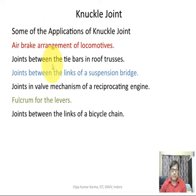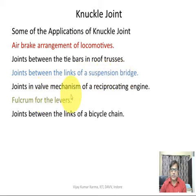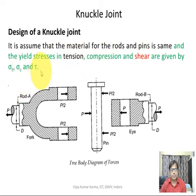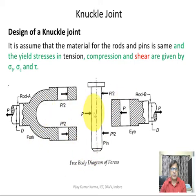Some applications of the knuckle joint include: air brake arrangements of locomotives, joints between tie bars in roof trusses, joints between links of a suspension bridge, joints in valve mechanisms of a reciprocating engine, fulcrums for levers, and joints between the links of a bicycle chain. Let us assume the materials for the rods and pins are the same, with yield stresses in tension, compression, and shear given by sigma_t, sigma_c, and tau. This is the free body diagram of forces acting on the knuckle joint — fork, pin, and eye.